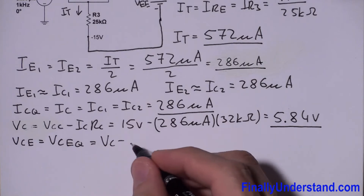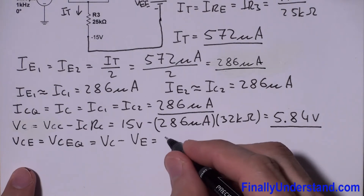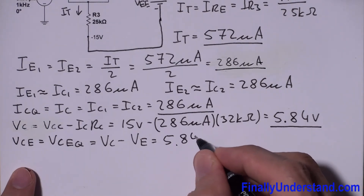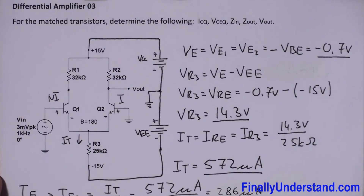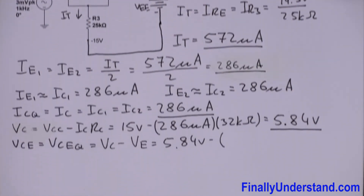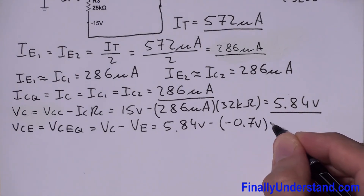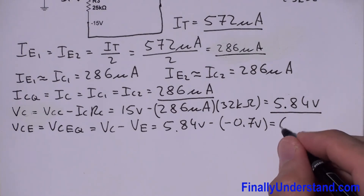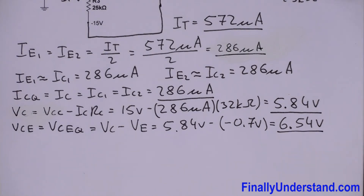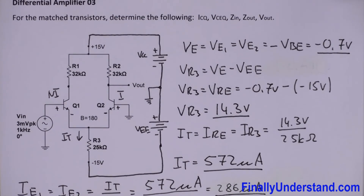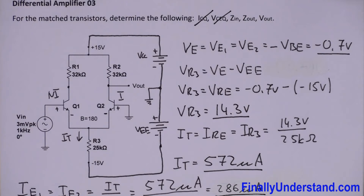This is the voltage at each collector. Next we find VCEQ, which is VC minus VE: 5.84 volts minus negative 0.7 volts equals 6.54 volts. So VCEQ equals 6.54 volts. We have now found both ICQ and VCEQ.